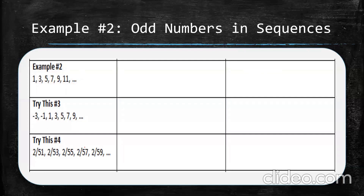Example 2 is all the odd numbers. Odd numbers are of the form 2n plus 1 — an even number plus 1. If your index starts at n=0, then 2 times 0 plus 1 gives you 1, n=1 gives 2 times 1 plus 1 equals 3, and so on. So this is simply 2n plus 1, and that works.